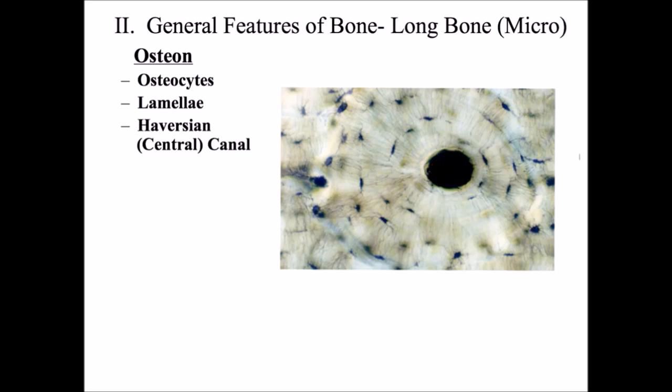Finally, you have tiny little canals located between osteocytes and between the central canal. These tiny squiggly lines are called canaliculi — as the name implies, they are canals that help transport substances. The canaliculi are all connected to the central canal, which is connected to the individual osteocytes, so that osteocytes can get the nutrients they need from the blood vessels and pass out waste.